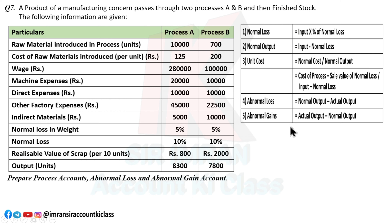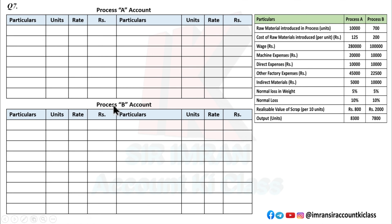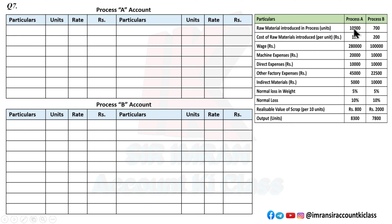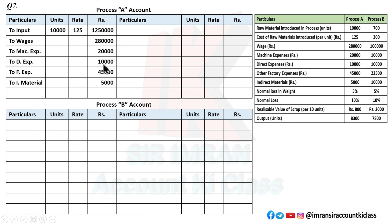Now let's build Process A. First, input: 10,000 units at ₹125, which comes to ₹12,50,000. Then enter wages, machine, direct, and indirect charges on the debit side. Now calculate normal loss — but here we have two categories. Weight loss is 5%, so 5% of 10,000 = 500 units. Weight loss gets no rate and no amount since it evaporates. Then normal loss is 10%, so 10% of 10,000 = 1,000 units.